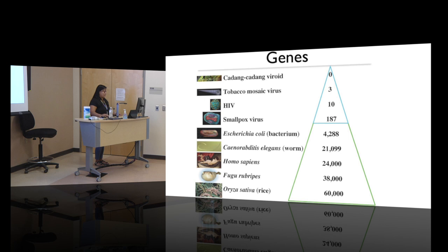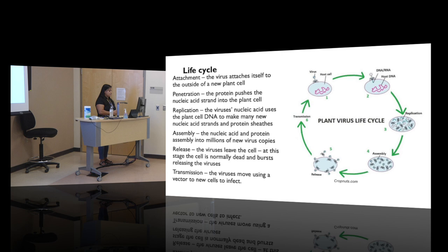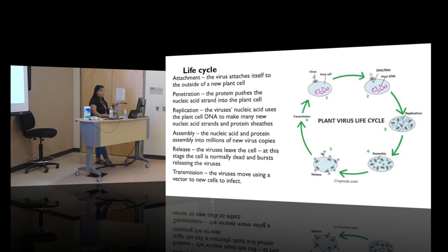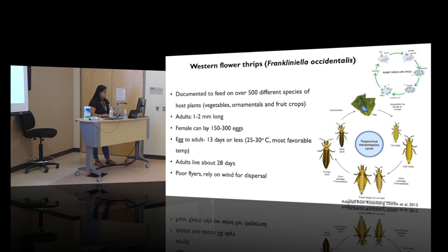In the virus life cycle, the virus particle must infect a host cell, get inside, collect materials, and use the host machinery for replication. One virus particle can become thousands or more, which then assemble and are released to other parts of the plant — moving through plasmodesmata, xylem, and phloem — or are carried to another plant via insect vectors.